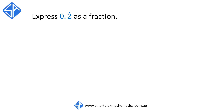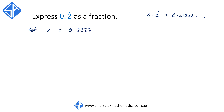For our first example we're going to convert 0.2 repeater to a fraction. 0.2 repeater is the same as 0.2222 and so on. We're going to start by saying let x equal to 0.2222.